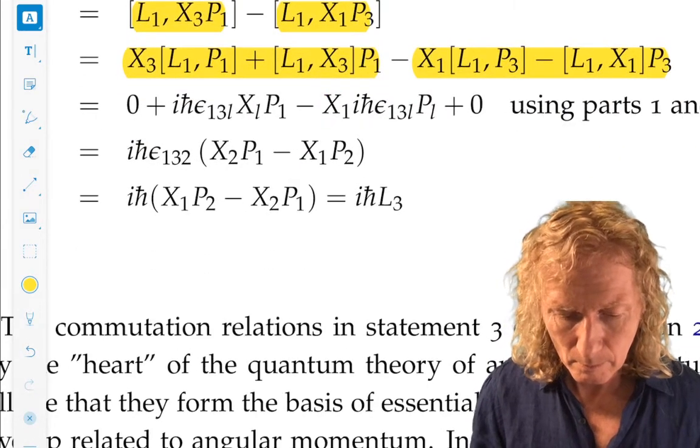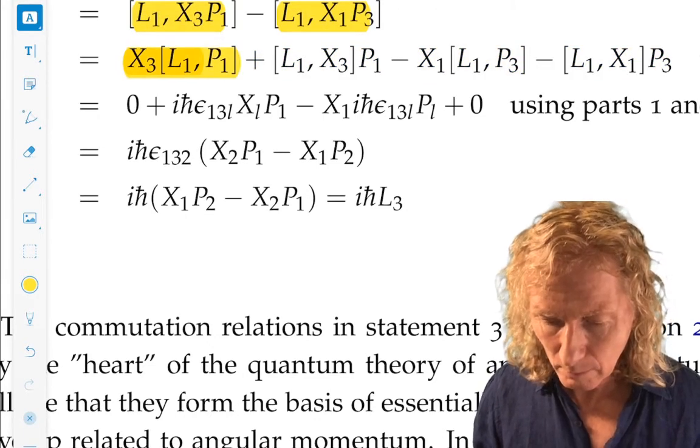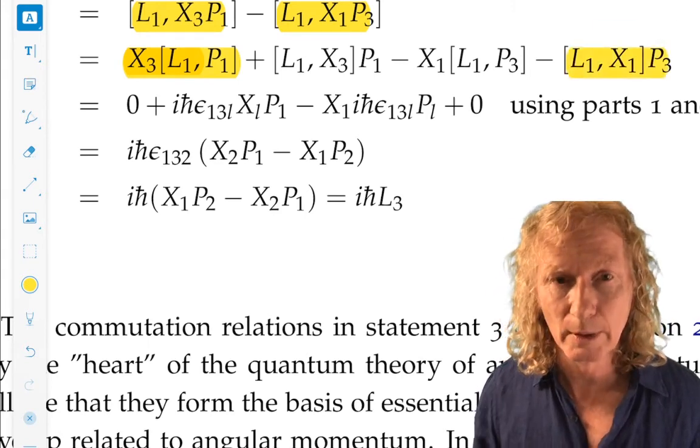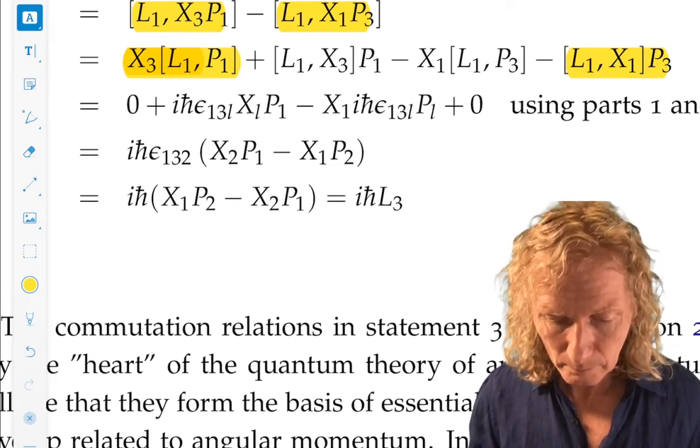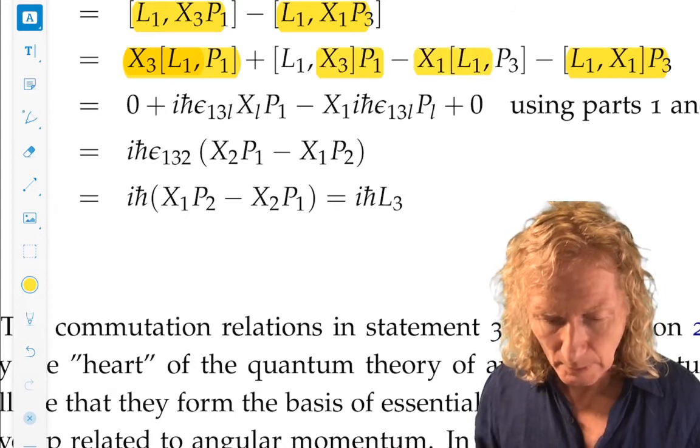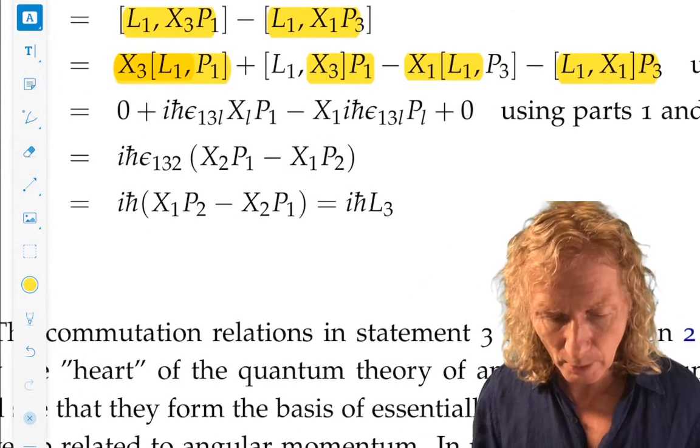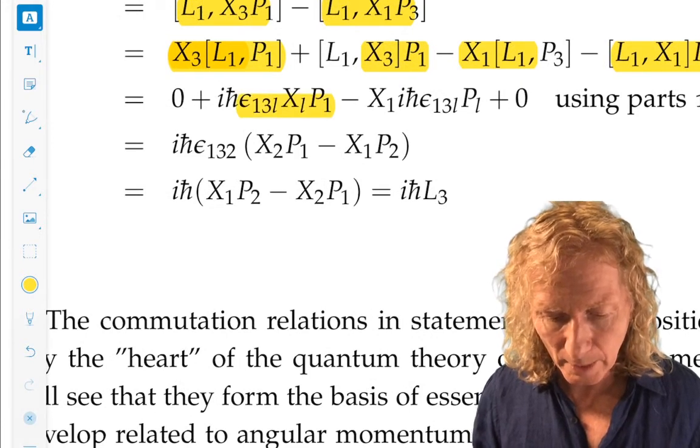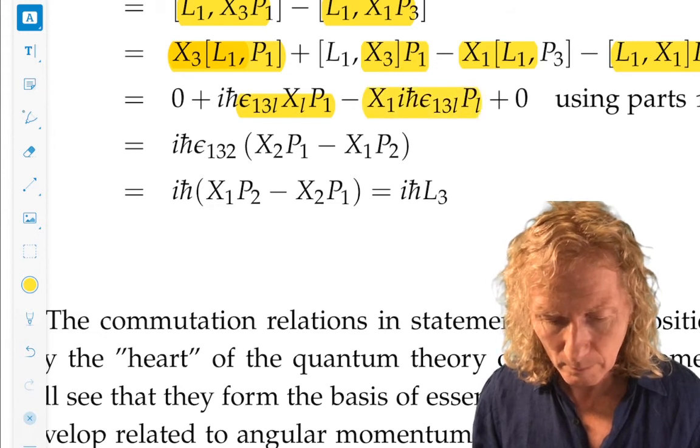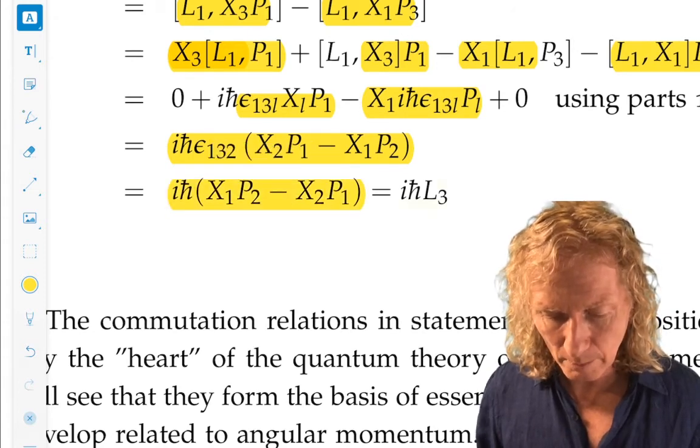So the first and last term are 0. We've already derived that. Repeated indices. So all we need to worry about are the next two. Again, you can use the previous results. Part 1 and Part 2 that we just derived. You can see the only option we're going to be left with is L equals 3 in this. Otherwise, the Levi-Civita symbol will give us 0. And we're left with this, which is ih-bar L3.